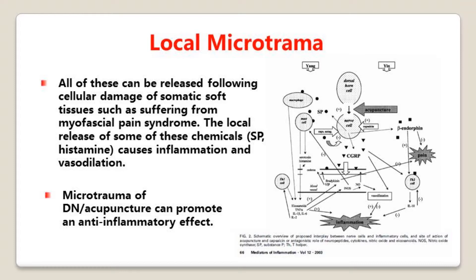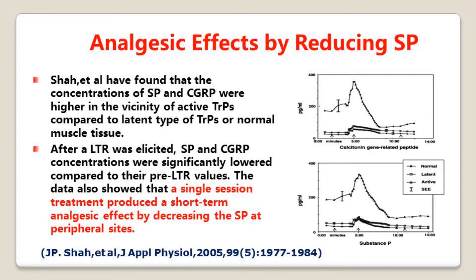All of these can be released following cellular damage of somatic soft tissues, such as suffering from myofascial pain syndrome. The local release of some of these chemicals, like SP and histamine, causes inflammation and vasodilation. However, microtrauma of dry needling or acupuncture can promote anti-inflammatory effects. Researchers have found that the concentrations of SP and CGRP were higher in the vicinity of active trigger points compared to latent trigger points or normal muscle tissue. After a local twitch response was elicited, SP and CGRP concentrations were significantly lowered compared to their pre-local twitch response values. The data also showed a single session treatment produced a short-term analgesic effect by decreasing SP at the peripheral site.